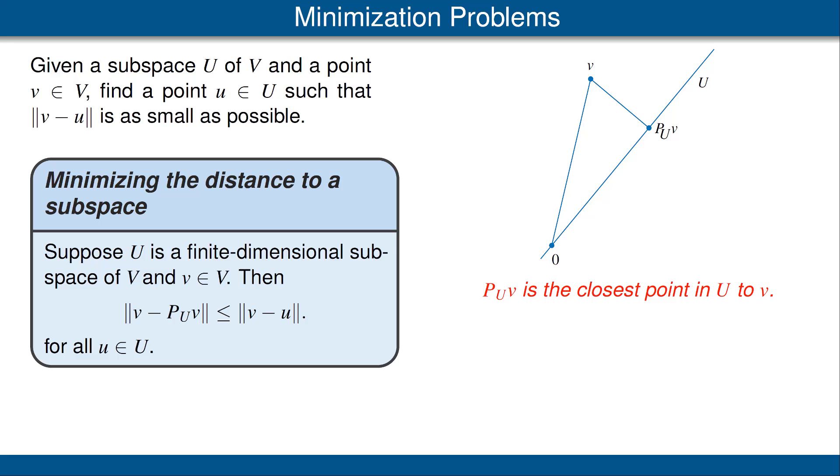The picture shown here may help explain this result. In this picture, we're representing U as a line through the origin. We have a point v,